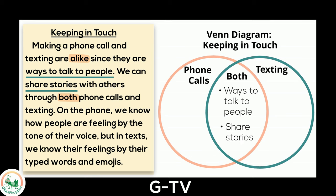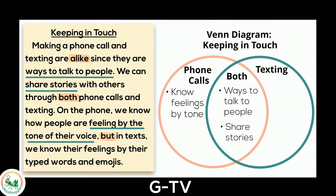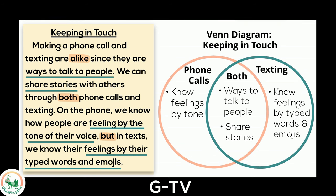The signal word 'but' is for contrasting. So we need to find the connecting information that is only about phone calls — we will write feelings by tone of voice in that circle. Then we find information only about texting and write feelings by typed words and emojis into the circle labeled texting, as this is only true about texting. The Venn diagram is finished. We added all of the important information, and now we can easily see the information being compared and contrasted from the text.